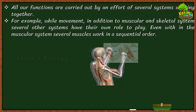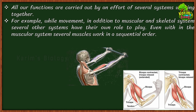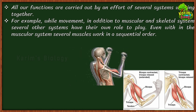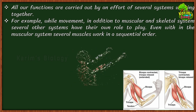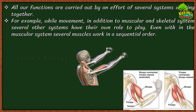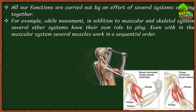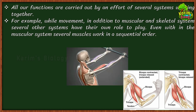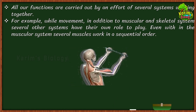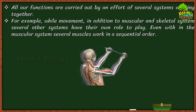This movement is brought about by the contraction and relaxation of the bicep and tricep muscles. If both bicep and tricep muscles contract at the same time, the movement is not possible. If they relax at the same time, the movement is also not possible. The bicep muscles have to contract while the triceps relax, and then the triceps contract while the biceps relax — only then is this type of movement possible.